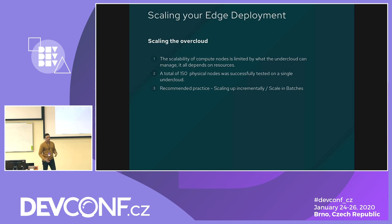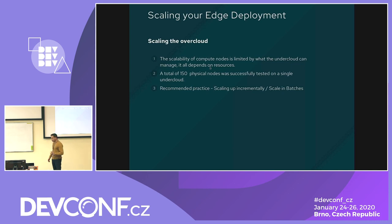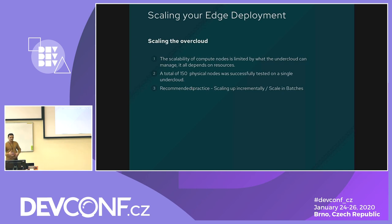For scaling, if your business grows and you need more resources at your edge site, we scale compute nodes one by one, or in a group, or in batches. The scalability of compute nodes is limited by what the undercloud can manage. As per our testing, 150 physical edge devices have been successfully tested in a production environment. It's better to scale in batches so that if a failure happens, it does not disturb your entire environment.